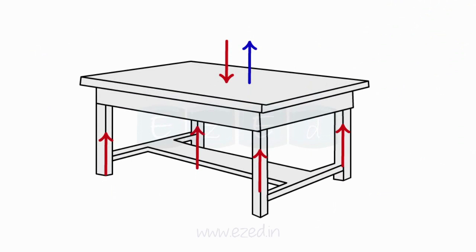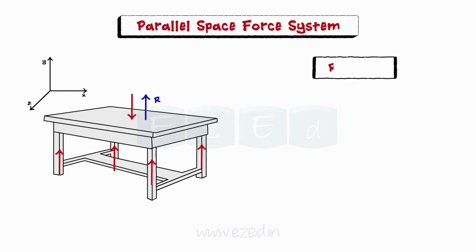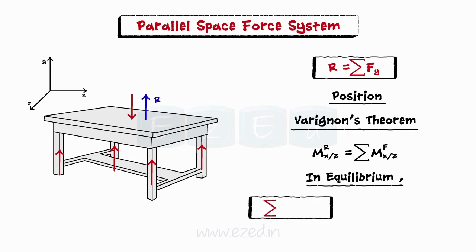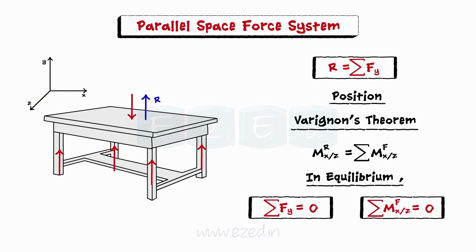Let us now consider a parallel space force system. For such a system, the resultant is a force parallel to the given force system. The resultant can be calculated by using summation of all forces along the axis parallel to the forces. The position of the resultant force is found using Varignon's theorem about two different axes perpendicular to the plane of the force. To analyze a parallel force system in equilibrium, we first equate summation of all forces along an axis parallel to the forces to zero. Also, the summation of moments of all forces should be equal to zero about both axes perpendicular to the plane of the forces.